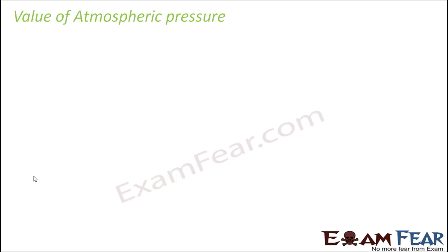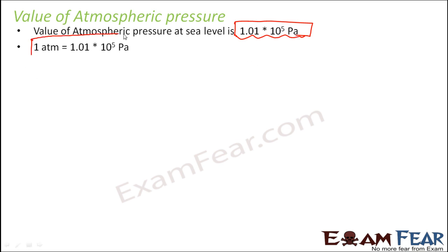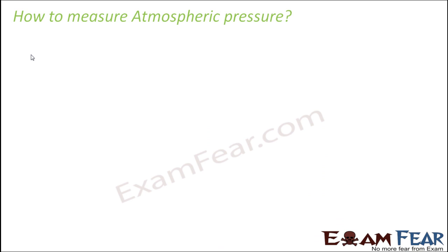How much is the atmospheric pressure? The value of atmospheric pressure at sea level is 1.01 × 10⁵ pascals. This value also changes with height — as height increases, atmospheric pressure decreases. The reference is taken at sea level. This value is denoted as 1 atmosphere, and atmospheres is also used as a unit of pressure.